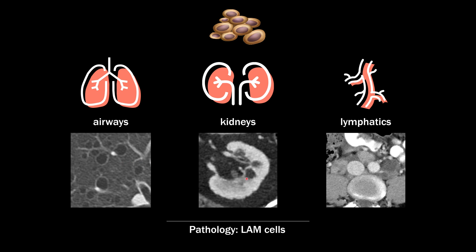In the kidneys, LAM cells can cause AMLs. In the lymphatics, they can cause chylous effusions in the chest and abdomen, as well as low-density lesions usually in the retroperitoneum called lymphangioliomyomas.